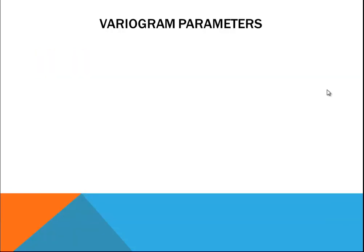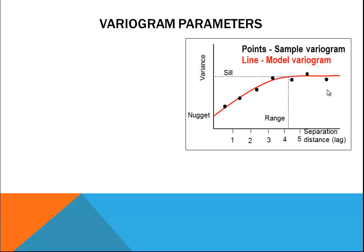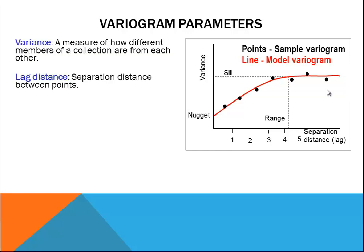The main five parameters are variance, lag, sill, range, and nugget. Later on, I show you how to calculate variogram.